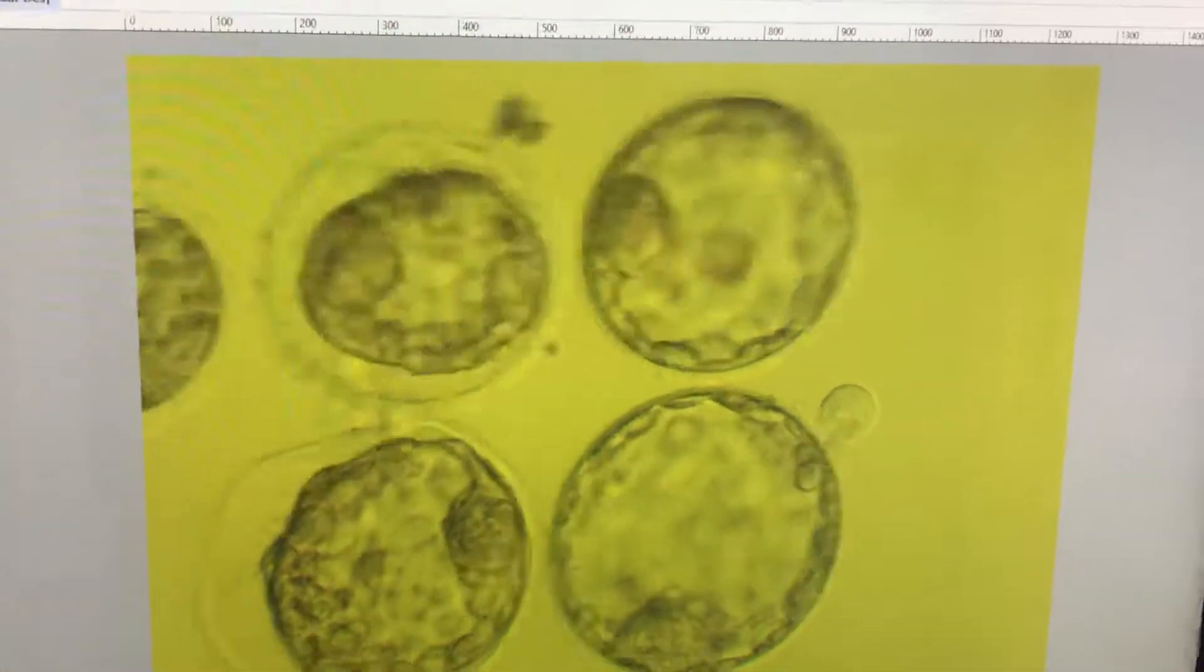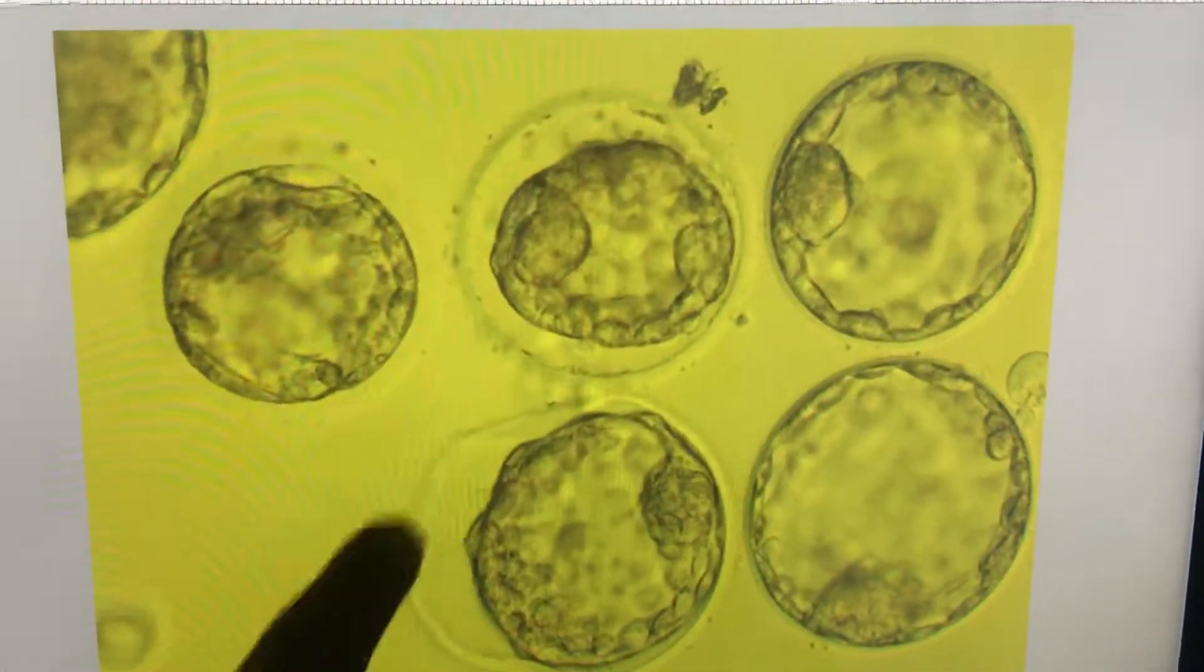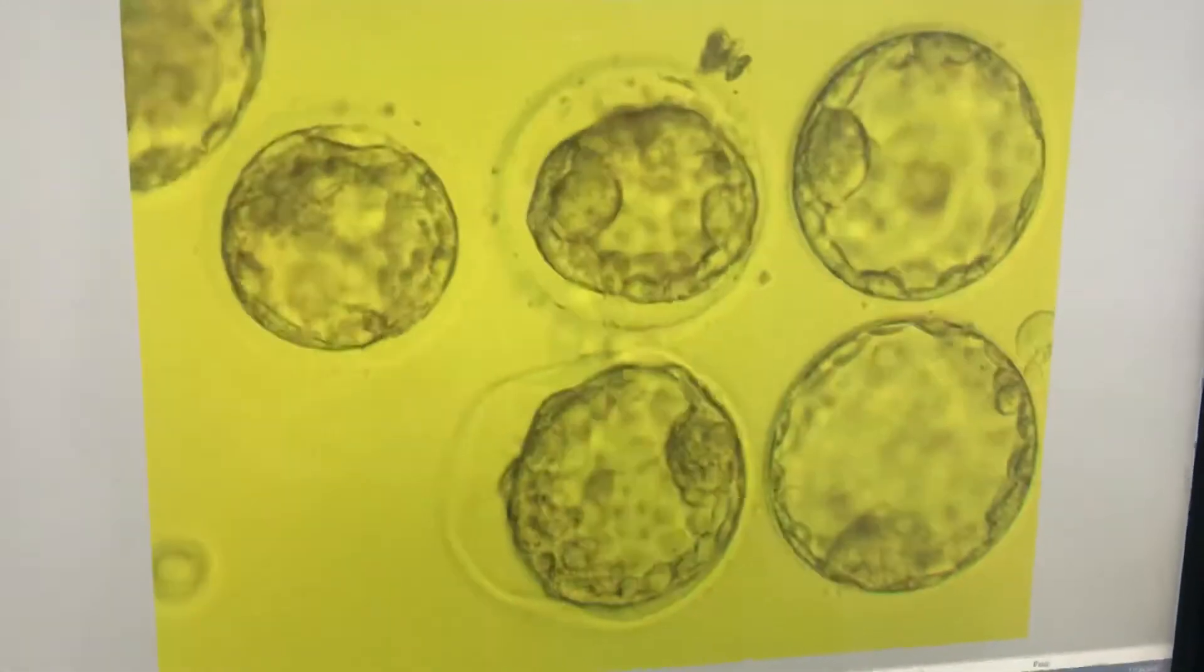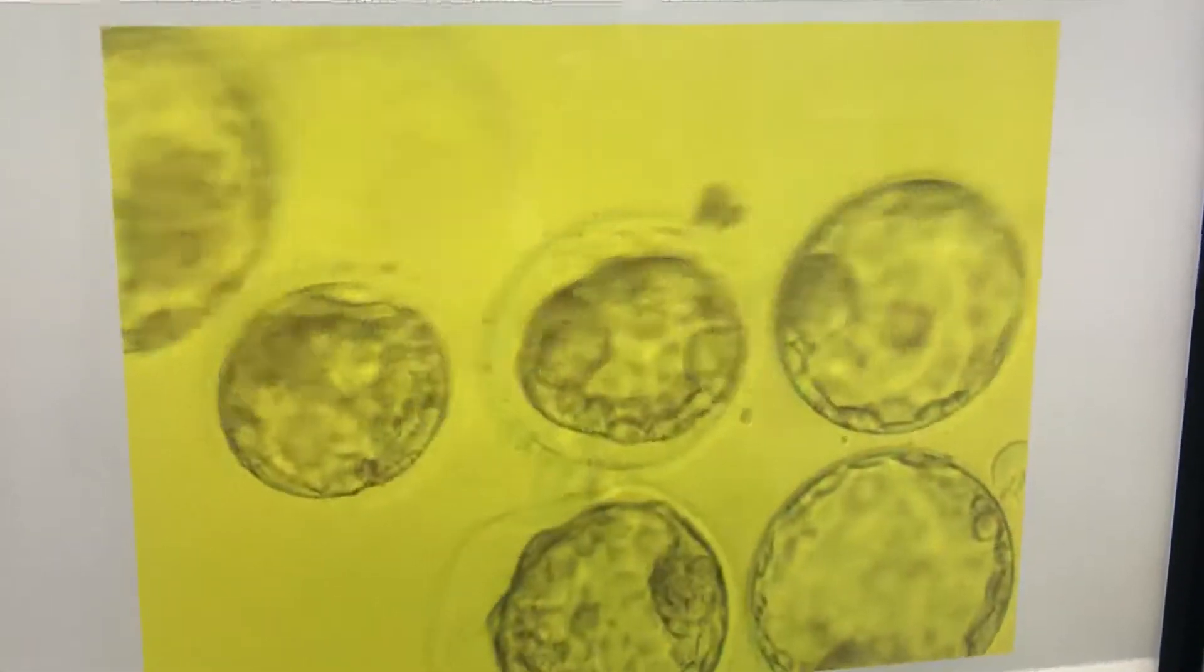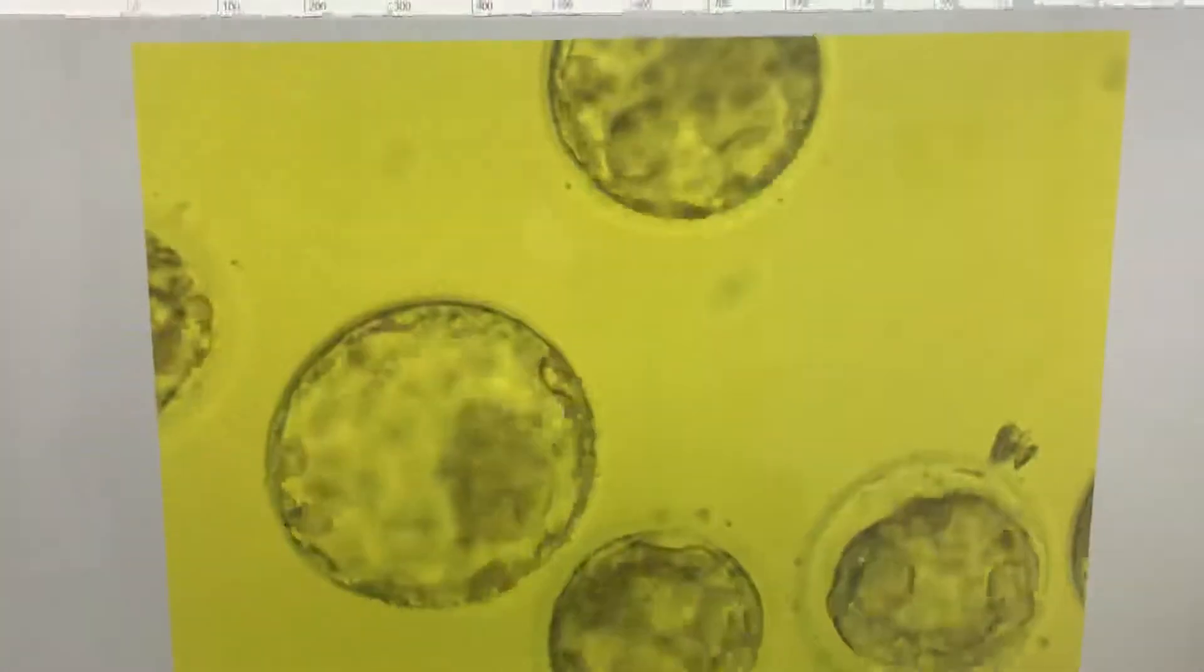5AA, 4AA. These two embryos are getting contracted. So this is a 3BB. And this is 5AA.